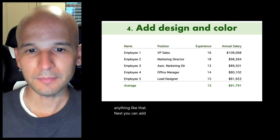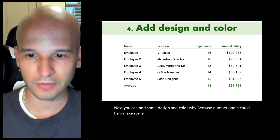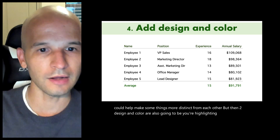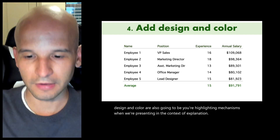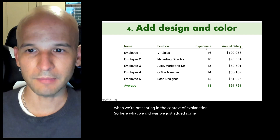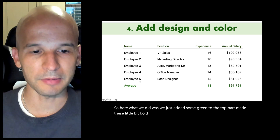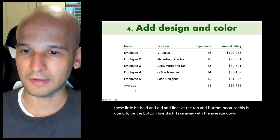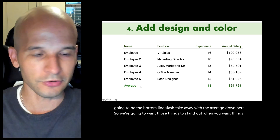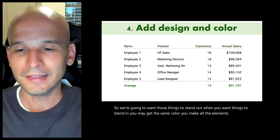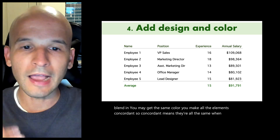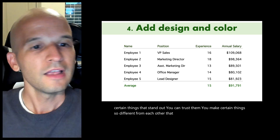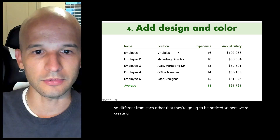Next, you can add some design and color. Number one, it can help make things more distinct from each other. Number two, design and color are also your highlighting mechanisms when presenting in an explanatory context. Here, we added some green to the top part, made the headers bold, and added lines at the top and bottom for the average — the bottom-line takeaway. When you want things to blend in, make them the same color — concordant. When you want things to stand out, contrast them.